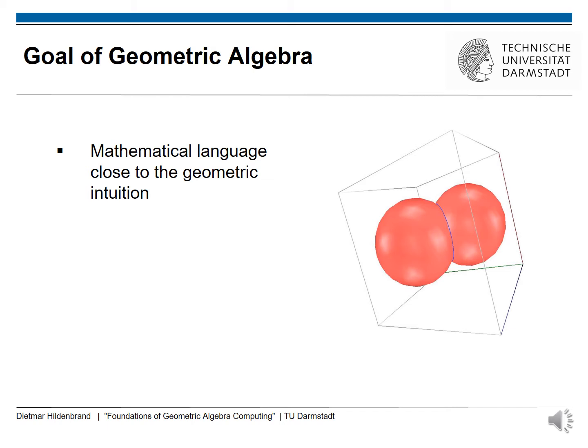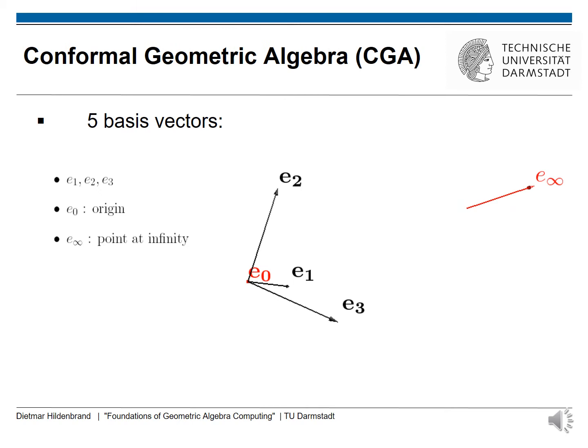What is the goal of geometric algebra? Geometric algebra in principle is a mathematical language which is very close to the geometric intuition. For instance, it is very easy to deal with objects like spheres, circles, planes and so on, and intersect them, check them, transform them, and we will see some examples later on.